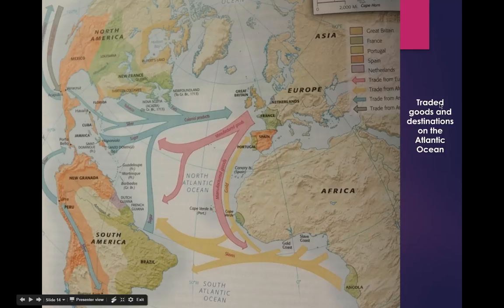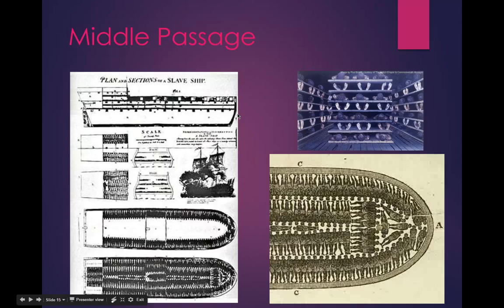You also have the goods that were traded and the destinations of the Atlantic Ocean, so this is something you might want to pause and look at — see who's involved and what's being sent over. And this is an example of the ships that were designed. This is a picture that a lot of people have seen — the bunks, the way people are packed into the specially designed compartments. This is where these people would be forced to lie day after day.